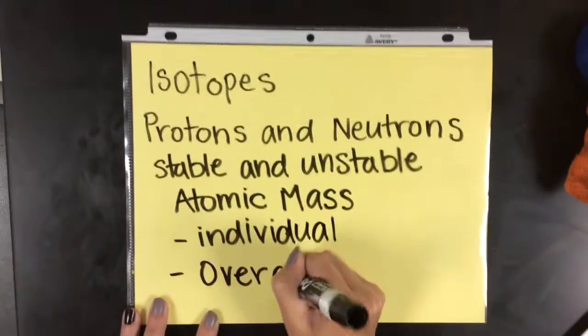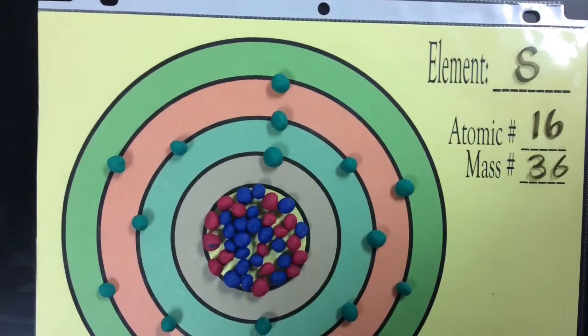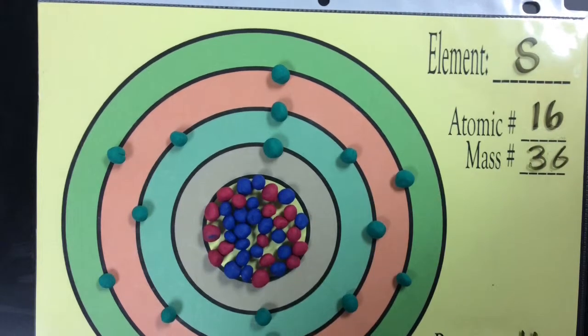This means that their atomic mass will affect the whole average atomic mass of the element. To cap things up, I've brought out the isotope sulfur-36.